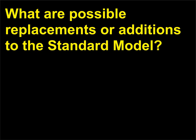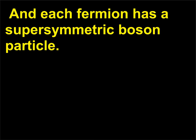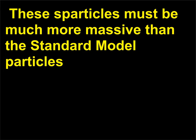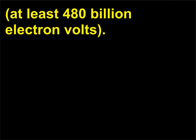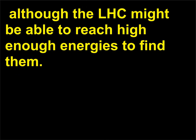What are possible replacements or additions to the standard model? One proposed replacement is called supersymmetry. Each boson in the standard model has a supersymmetric fermion partner particle, or sparticle, and each fermion has a supersymmetric boson particle. They are called sleptons, squarks, gluinos, and photinos. These sparticles must be much more massive than the standard model particles — at least 480 billion electron volts. At this time there is no direct evidence of their existence, although the LHC might be able to reach high enough energies to find them.